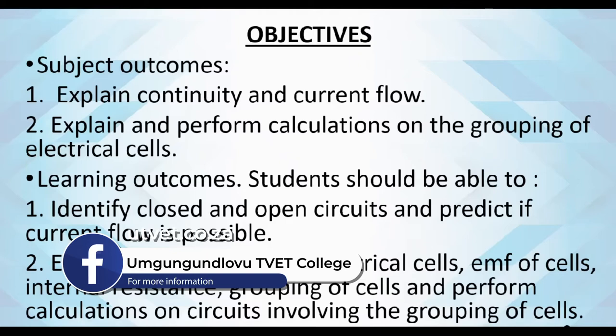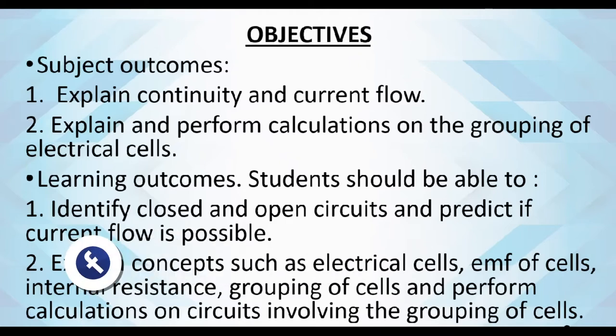Let's quickly look at our objectives. Our subject outcomes are: explain continuity and current flow, and explain and perform calculations on the grouping of electrical cells. Our learning outcomes are that you, the student, should be able to identify closed and open circuits and predict if current flow is possible. You should also explain concepts such as electrical cells, EMF of cells, internal resistance, and grouping of cells, and perform calculations on circuits involving the grouping of cells.